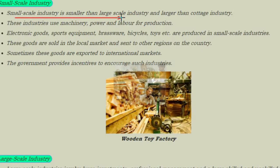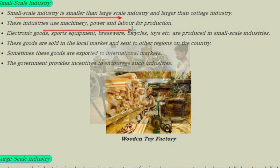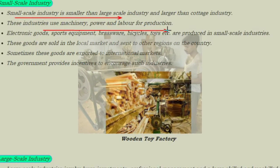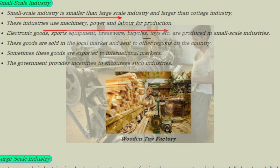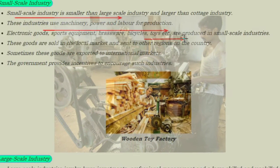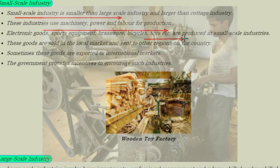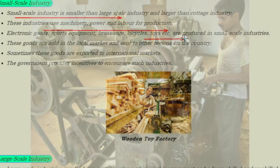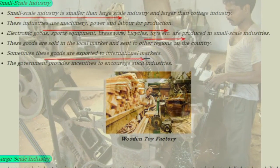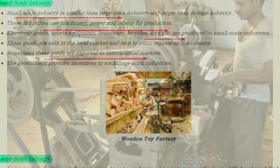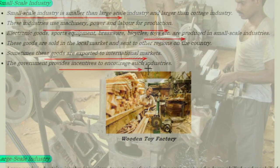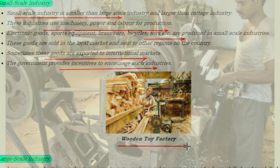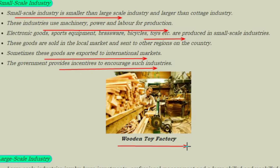Small scale industry is smaller than large scale industry. These industries use machinery, power, and labor for production. Electronic goods, boat equipment, brassware, bicycles, toys, etc. are produced in small scale industries, and sometimes these goods are exported to international markets. The government provides incentives to increase such industries. Here is an example image showing a wooden toy factory, which is an example of small scale industry.